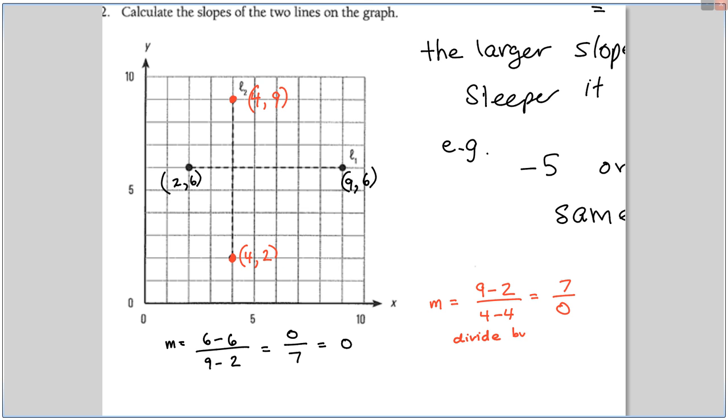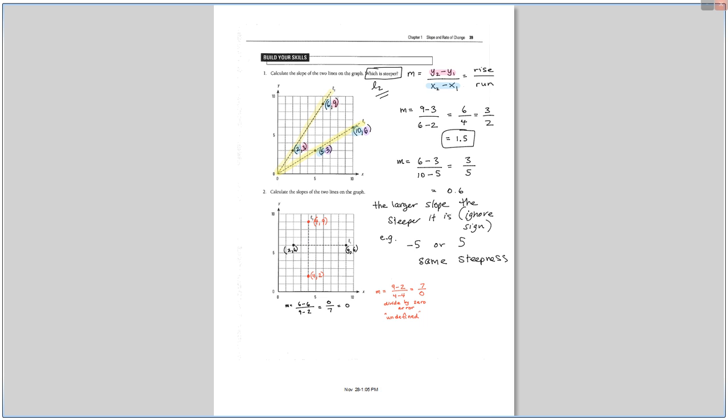Now for that slope calculation, you subtract the y's first. What is it? 9 take away 2 all over, and then you subtract the x's. 4 take away 4. You have 7 over 0. Now you try to put that in your calculator, what happens? 7 divide by 0. Try it. You get divide by 0 error. And in math, we call that the worst curse word in math history. Undefined. Yeah. No, you get a promotion. I'd be happy if you said undefined.